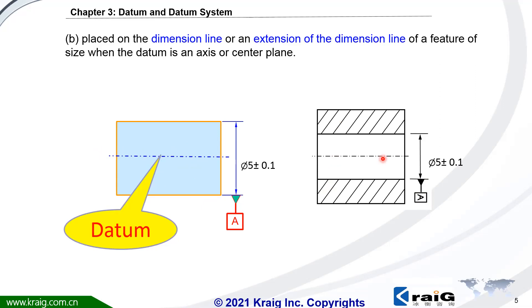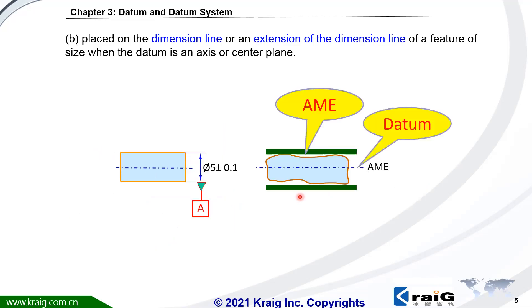But how could we find this datum A? How could we find this axis from the actual parts? Again, we need to use AMEE. Here, this is the actual parts. We need to find the axis to be a datum A. You need to find the AMEE which is unrelated to datum. This is a single feature. This is the AMEE. The datum A is the axis of the AMEE, or this AMEE is the datum simulator you're going to use.